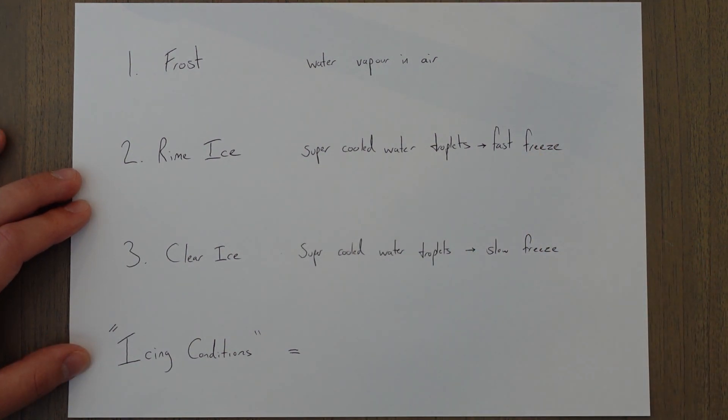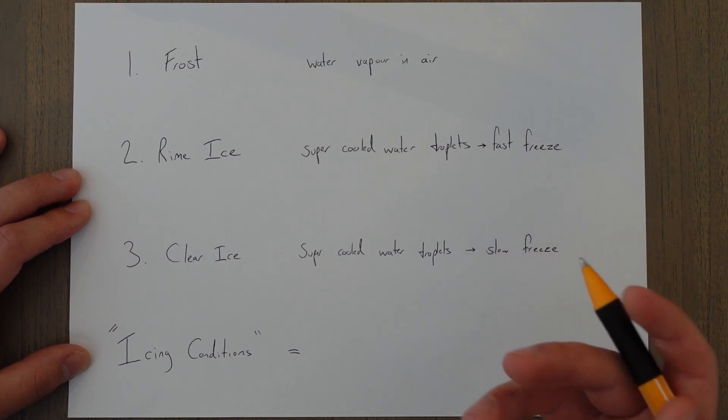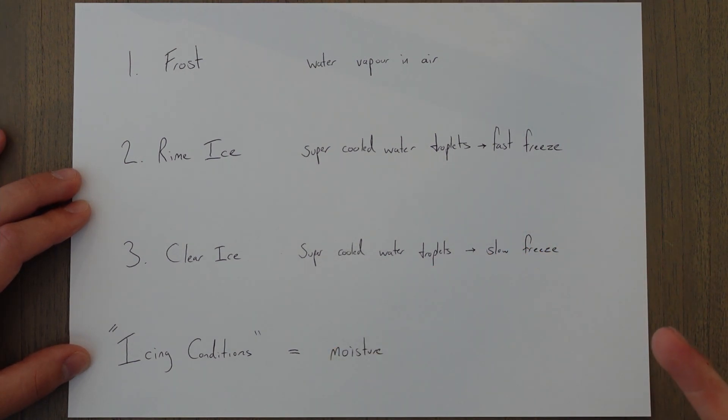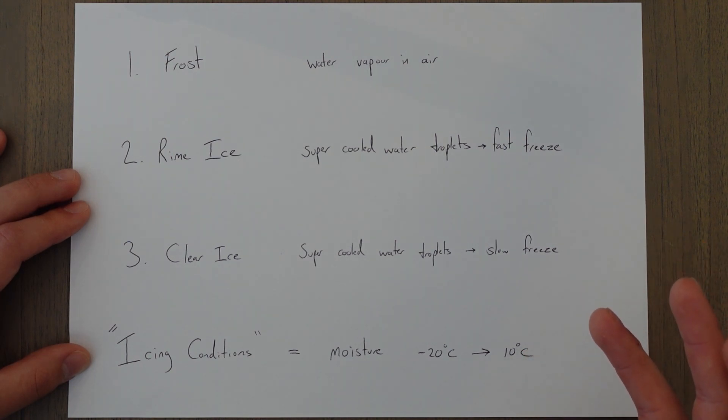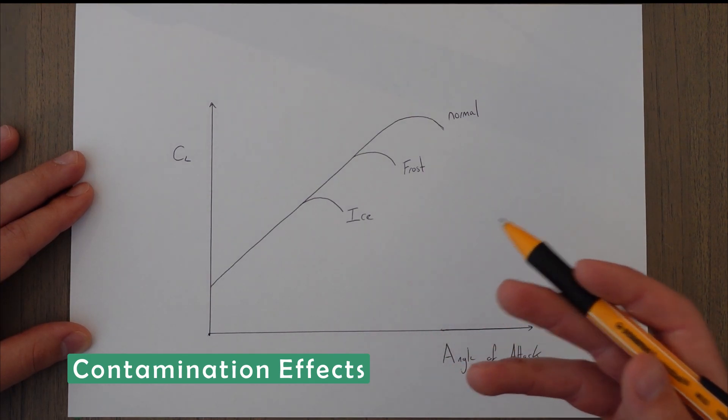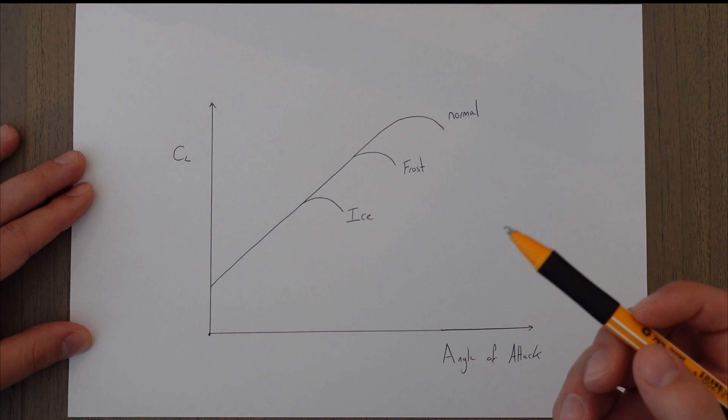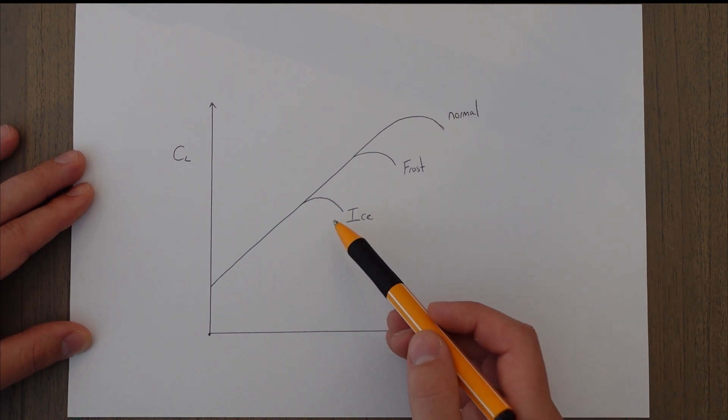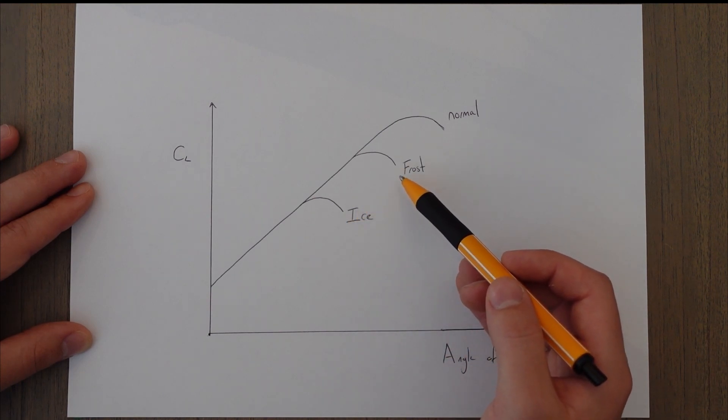So rime ice and clear ice form when we're within icing conditions which usually means in moisture between about minus 20 degrees celsius and 10 degrees celsius. I know 10 degrees celsius is above the freezing point but the wind chill effect cools down the temperature of the aircraft surfaces significantly and therefore you can run into the risk of freezing temperatures even when well above freezing. So both rime ice and clear ice change the shape and texture of the wing causing friction in the boundary layer and leading to an early separation of the airflow as we can see here. Frost does this as well but to a lesser extent.